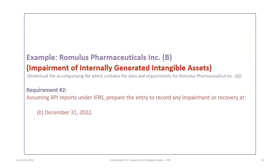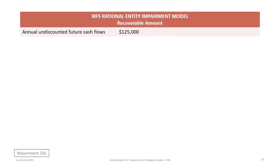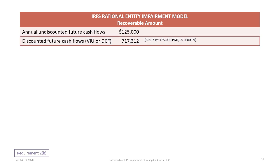We will now proceed with Requirement 2B: to determine if there is any impairment or recovery for the year ended December 31st, 2022. We determine the recoverable amount starting with the annual undiscounted future cash flows. Because of the success of the drug, the annual cash flow changed to $125,000. Under IFRS, we must discount those future cash flows.